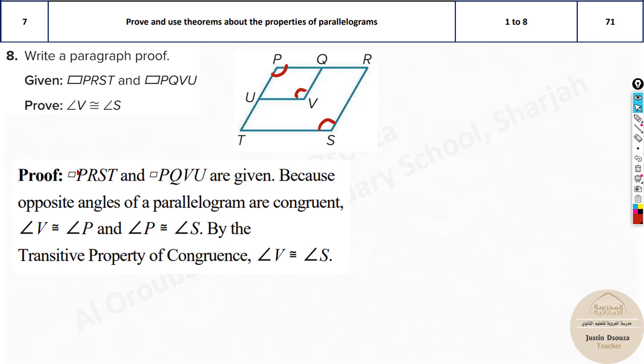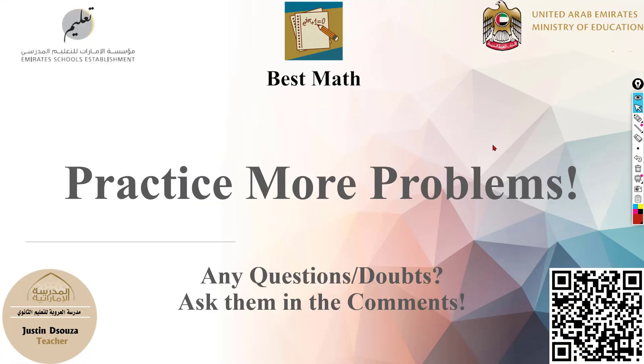Here, parallelogram PRST, they are given because opposite sides of a parallelogram are congruent. We have angle P and angle V congruent. And again, angle P and angle S are congruent. Therefore, from transitive property, we can tell V and S are congruent. That's it. They are very easy. You should just look into what is given, look at the question, and then you can easily solve them. And that's the end of this topic, topic number seven. Again, it was an easy one. It was just the beginning of parallelograms. So we will continue more with this geometry. See you in the next video, guys.